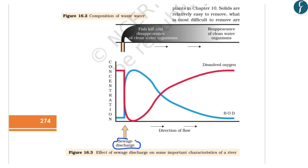When domestic sewage is discharged into water bodies, bacteria try to degrade the biodegradable material. As these bacteria consume the biodegradable material, they require a high amount of oxygen. By calculating the Biological Oxygen Demand (BOD), one can ascertain how much domestic waste is present in a water body. At the point of sewage discharge, the demand for oxygen increases and dissolved oxygen decreases sharply, as shown by the red line in the diagram.